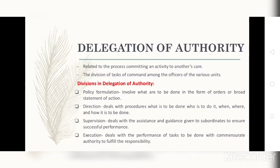Next is execution — deals with the performance of tasks to be done with commensurate authority to fulfill the responsibility. Whenever you have already executed the delegated authority, the person delegating the authority should have commensurate accountability for whatever the outcome will be. That is what is involved in the delegation of authority.